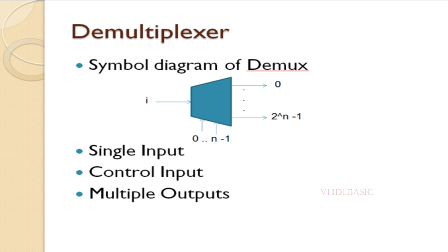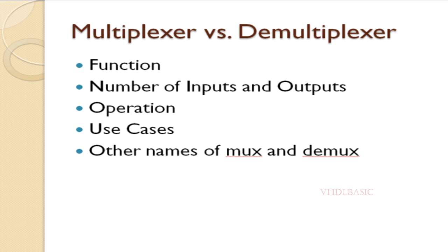Now moving on to the differences between multiplexer and demultiplexer. Function-wise, a multiplexer selects one of several input signals and routes it to a single output based on a control input. It combines multiple input lines into one output line. MUXes are used to conserve resources, reduce the number of wires or channels needed in a system, and efficiently transmit multiple data streams over a single channel.